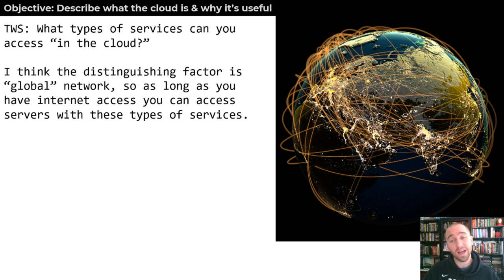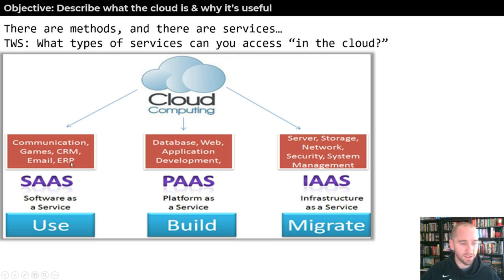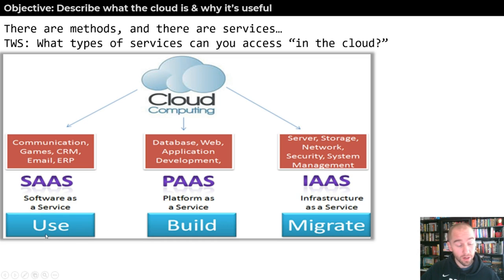There are methods of delivery and there are services. What they like to do is say things like software as a service to describe these types of services. Then you have the idea of platform as a service — that's the database example. And then you have an entire infrastructure as a service. Software as a service is for people to use, platform as a service exists for people to build from, and infrastructure as a service is a type of cloud you would migrate to.